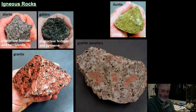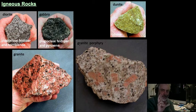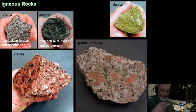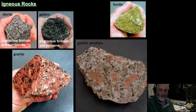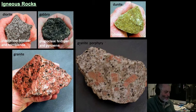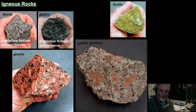Gabbro and basalt go together. If basalt is erupting at the surface, at depth there's probably a gabbro crystallizing — gabbro is the phaneritic version of basalt. Basalt crystals are too small to see. If it's phaneritic and dark-colored — mafic — that's gabbro. Some call it 'black granite,' which is a marketing term used for polished slabs on counters. In science we call it gabbro. Gabbro is pretty important in ocean crust since most ocean crust is made of mafic minerals — gabbro as well as basalt.